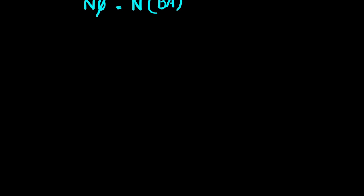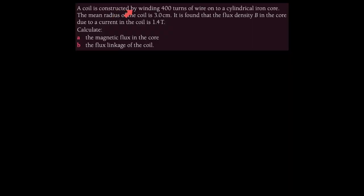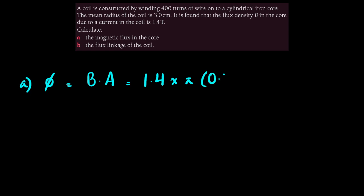Worked example — Part A: A coil has 400 turns wound onto a cylindrical iron core with a mean radius of 3 cm. The flux density in the core is 1.4 T. Calculate the magnetic flux in the core. Since the core is just a cylinder, φ = BA = 1.4 × π × (0.03)², which gives approximately 4.0 × 10⁻³ Wb (4.0 mWb).